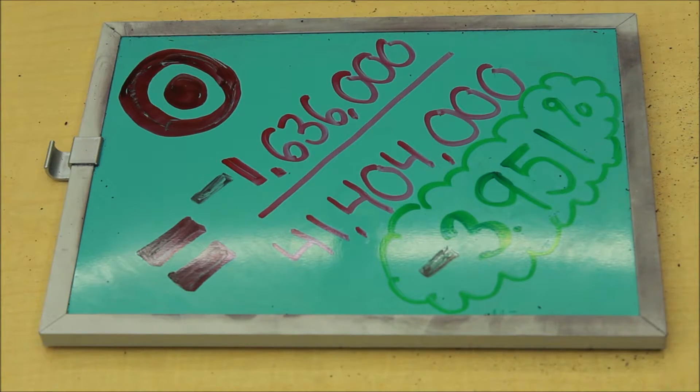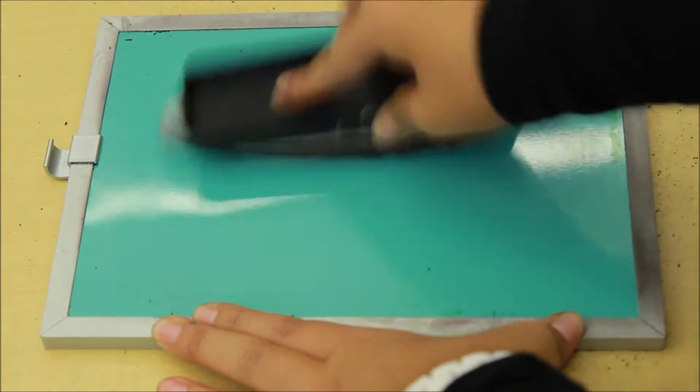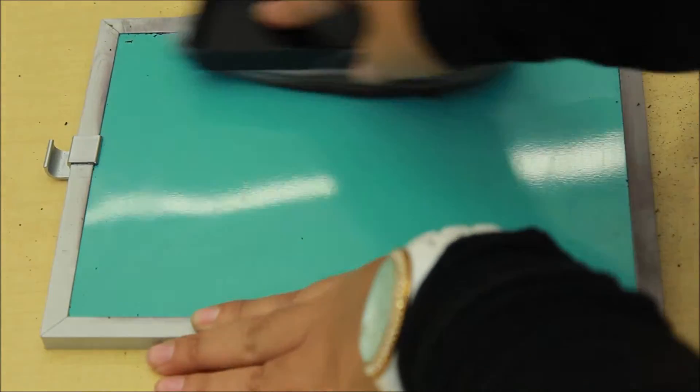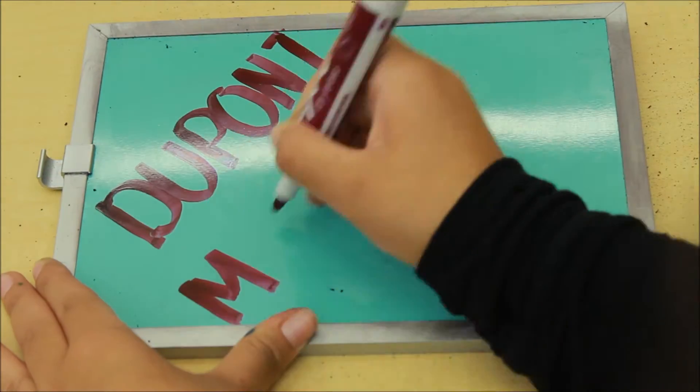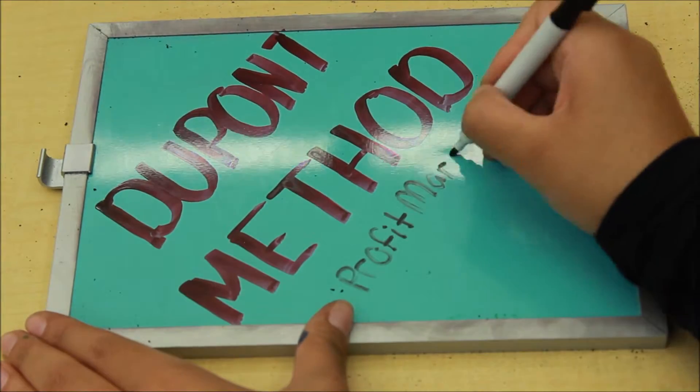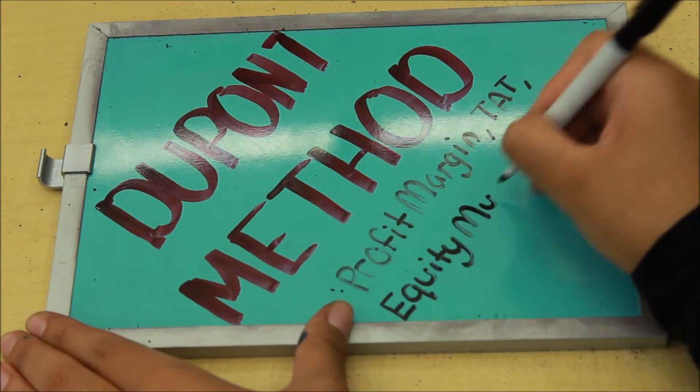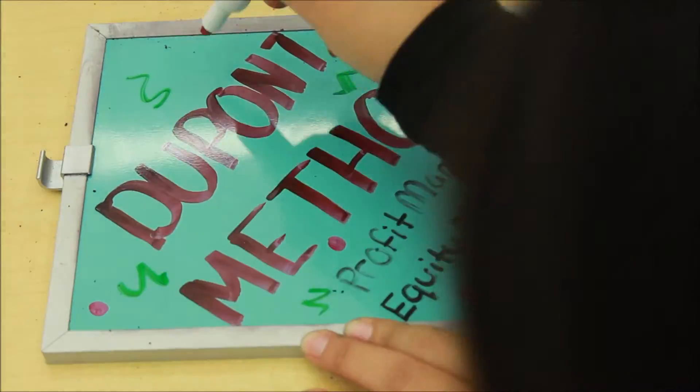Finally, we'll be using the DuPont method to analyze the two companies because it is a strong measure of how well a company's management can create value for its shareholders. This includes taking the net profit margin and multiplying it by the asset turnover and the equity multiplier. In other words, you're measuring the operating efficiency, the financial leverage, and the asset use efficiency to get your return on equity.